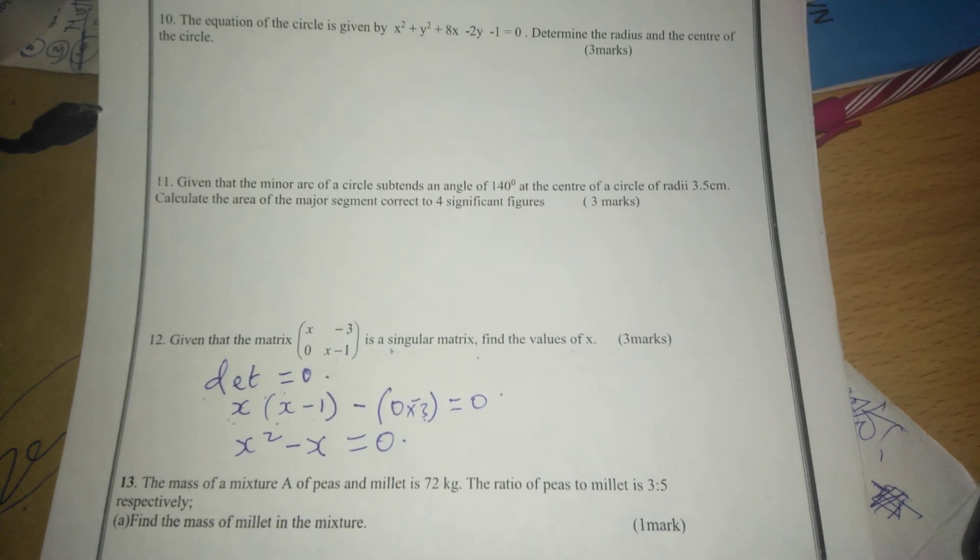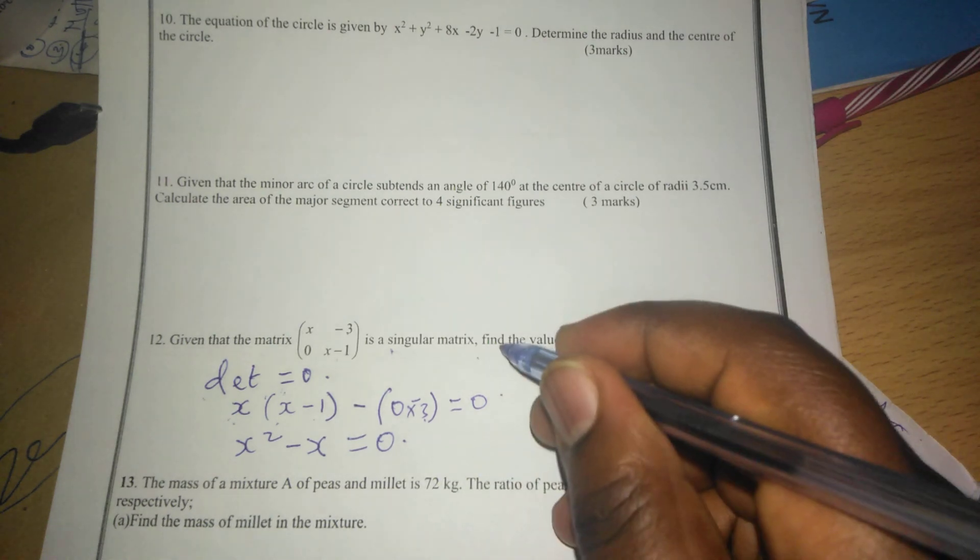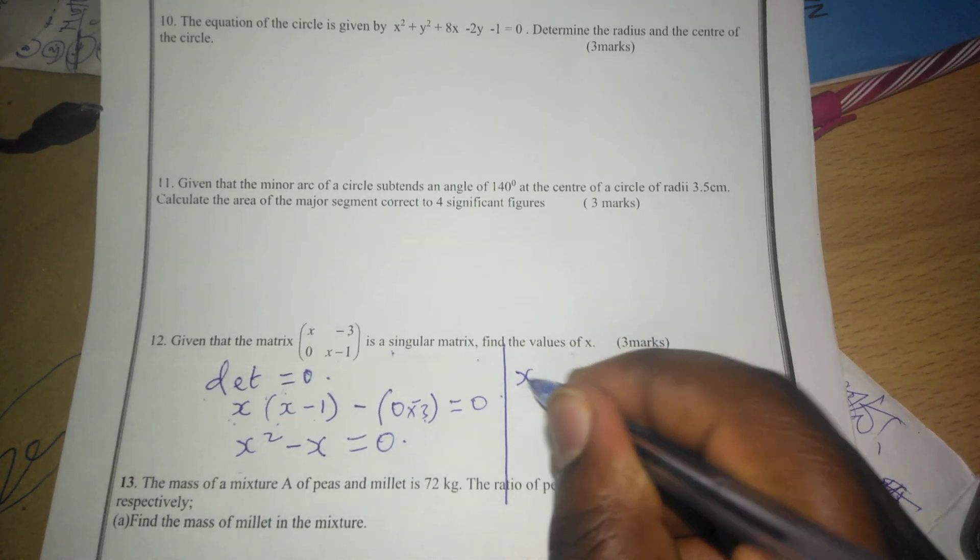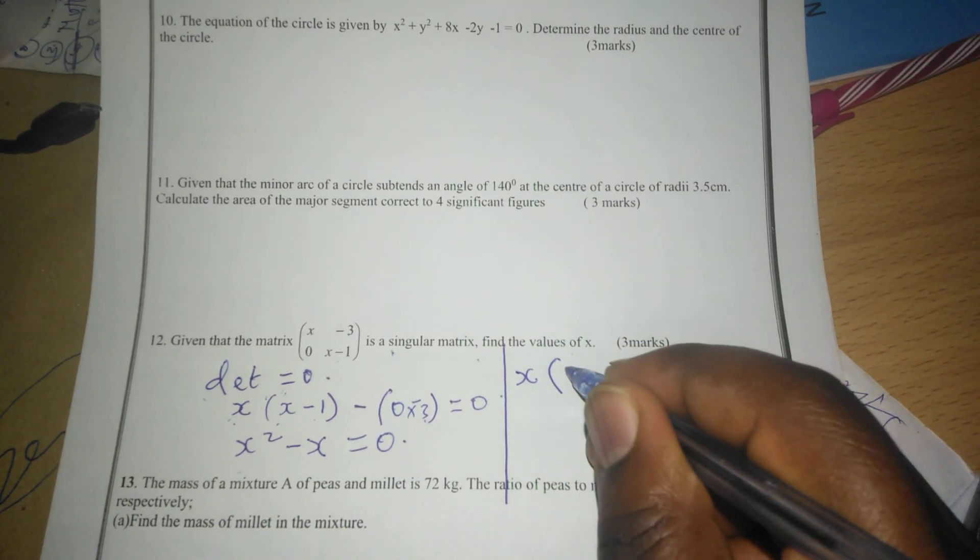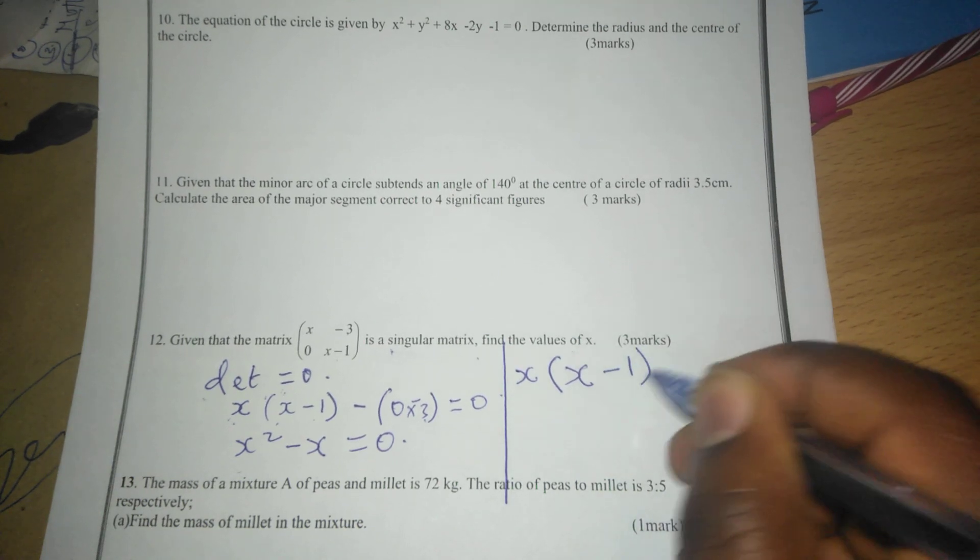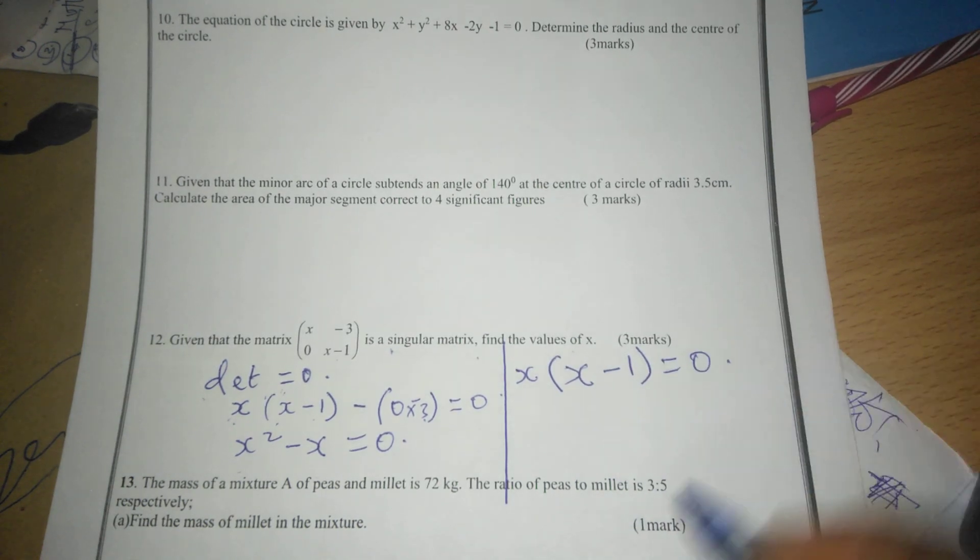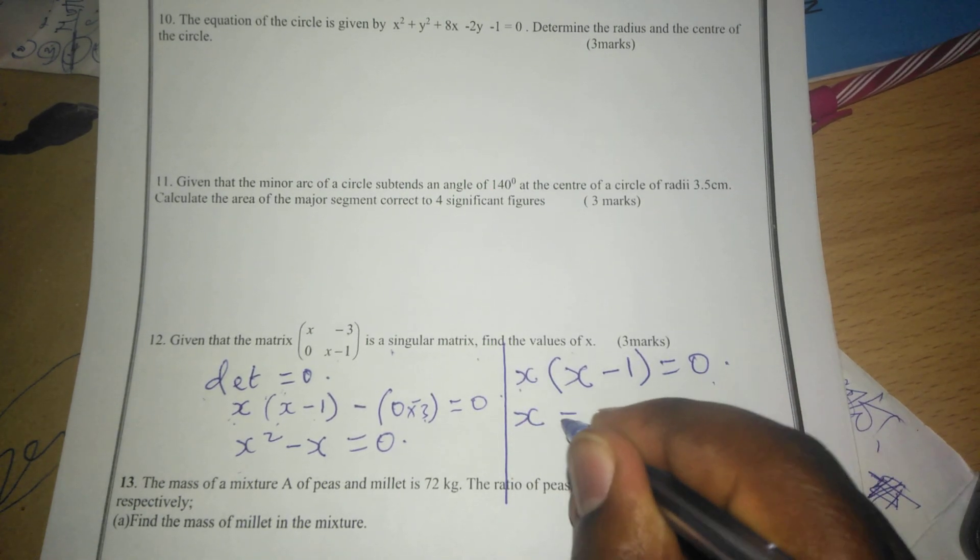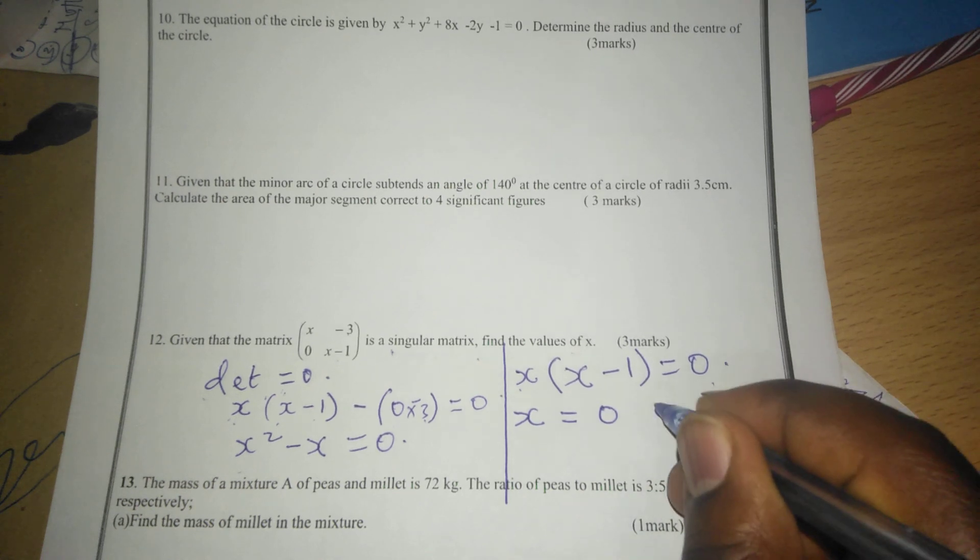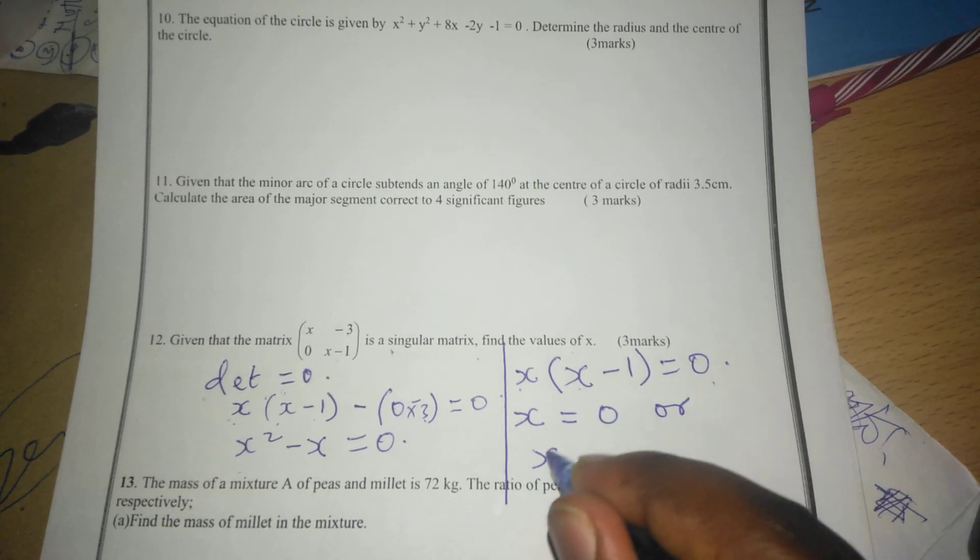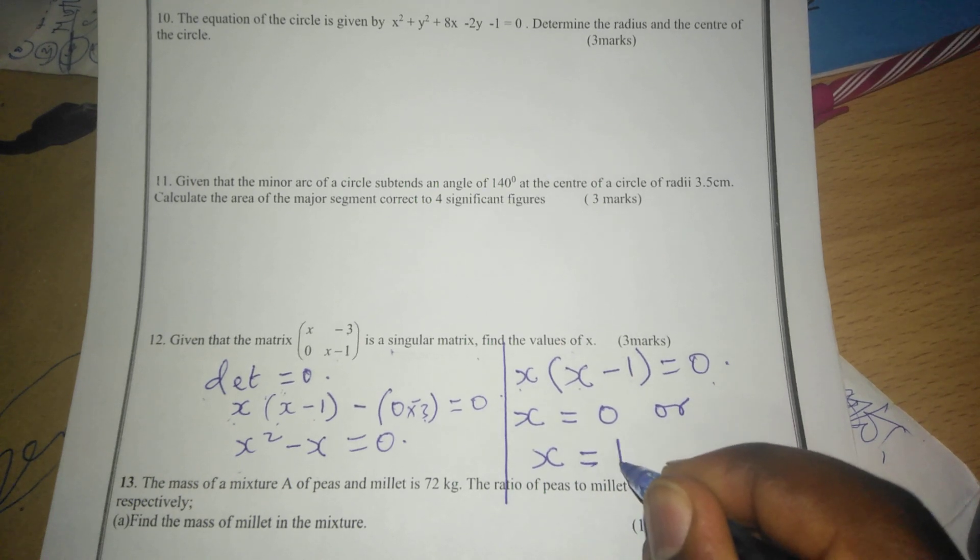Now we can solve this by factoring out x such that we remain with x(x-1) equals to 0. So with this, we can equate each factor independently to 0 such that x can either be 0, or x minus 1 equals to 0, which will mean x equals to positive 1.